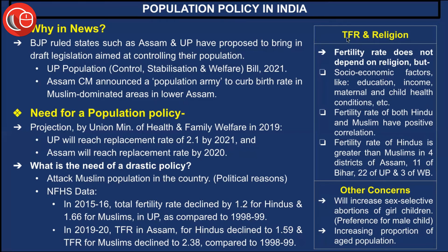Is there any logical relation between the total fertility rate (TFR) and religion? The fertility rate does not depend on religion. What truly matters are socio-economic factors like education, income, maternal and child health conditions, and family planning — these play a very important role in determining how many children are born to one fertile woman. The fertility rates of both Hindus and Muslims have a positive correlation. In fact, Hindu fertility rates are greater than Muslim fertility rates in four districts of Assam, eleven of Bihar, twenty-two of Uttar Pradesh, and three of West Bengal. Therefore, trying to curb only the Muslim population clearly seems to reflect a political agenda, merely covered up in the name of a national population control policy.